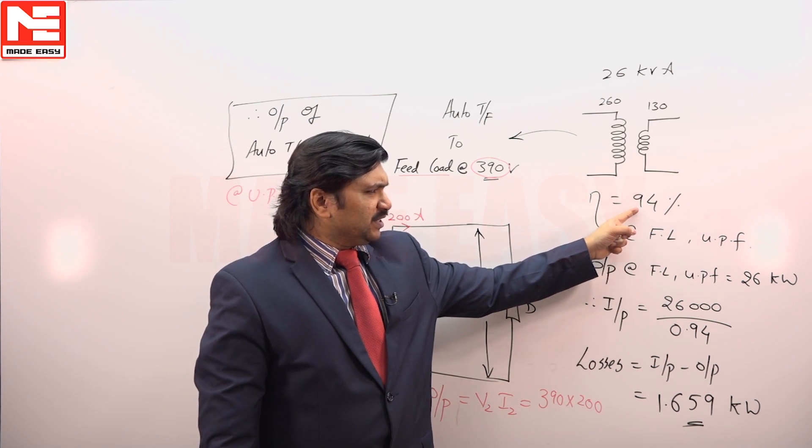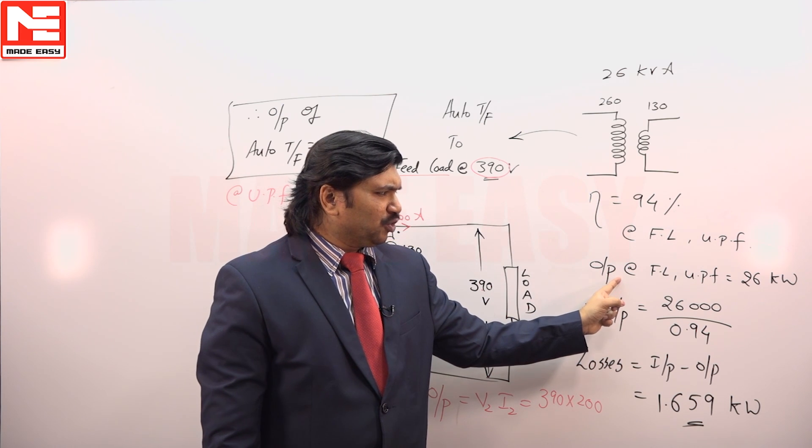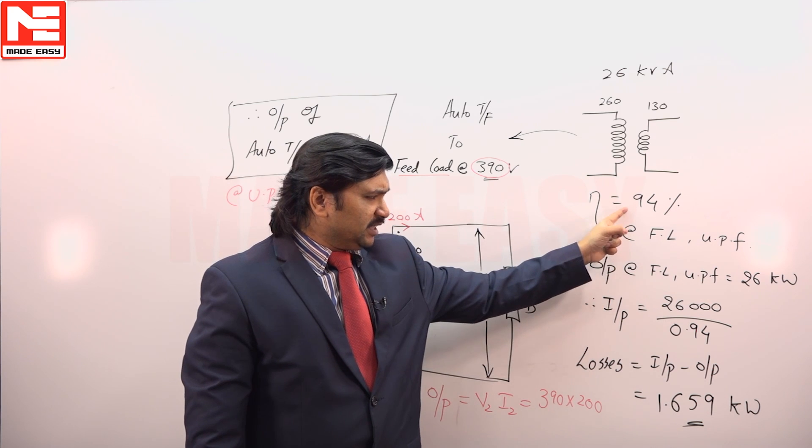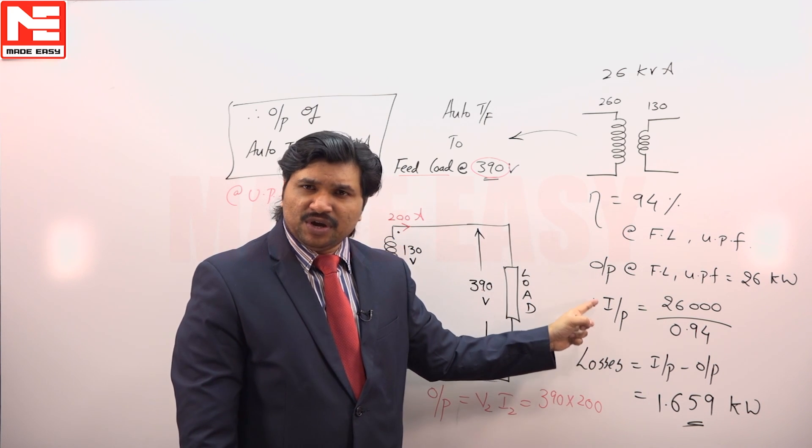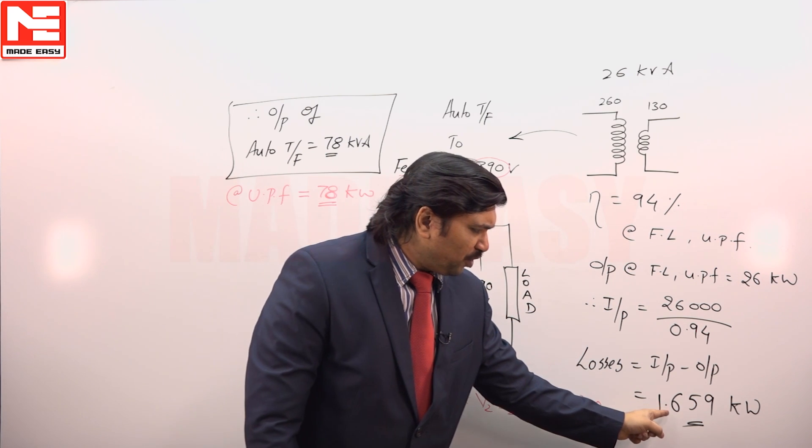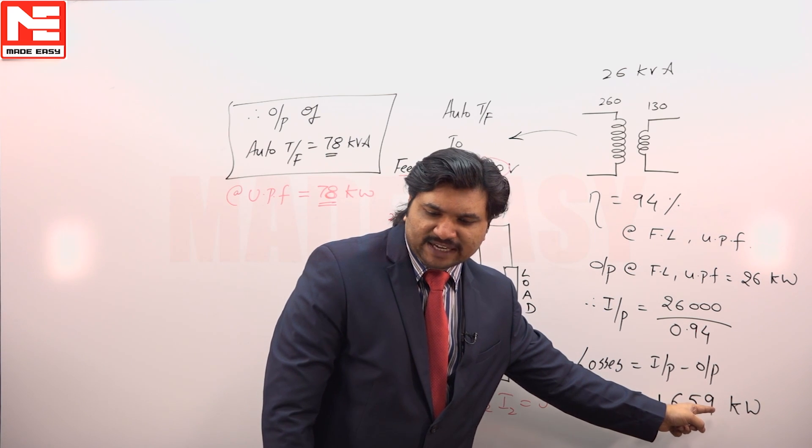Once you are given efficiency and output - because output at full load is 26 kilowatt - once you are given output and efficiency we can calculate input. Input minus output is loss, 1.65 kilowatt is loss we can calculate like this.